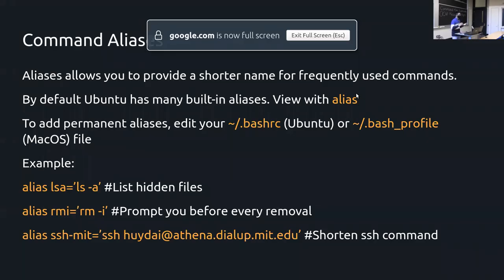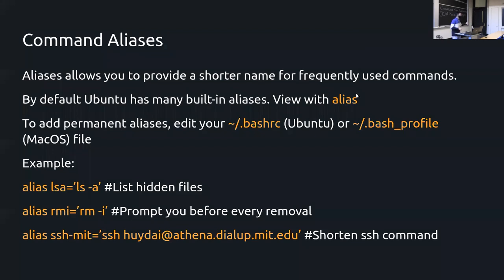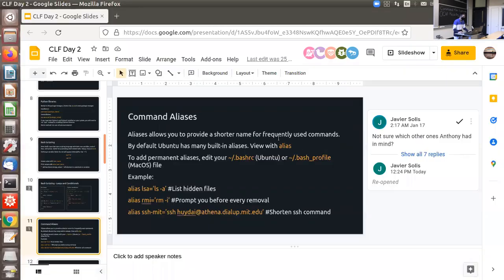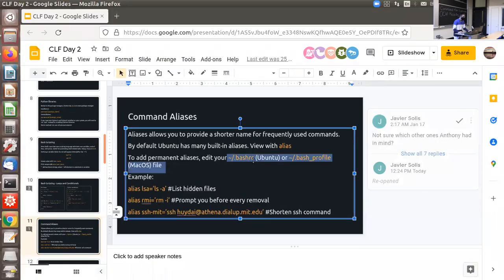Besides scripting, you can also have shortened commands called aliases. Maybe you're tired of typing 'ssh something@athena.dialup.mit.edu' over and over. What you can do is define an alias — just a short name for it. On Ubuntu, you have a file called '~/.bashrc', and on Mac, '~/.bash_profile'. Sometimes you need to create these if they don't already exist.